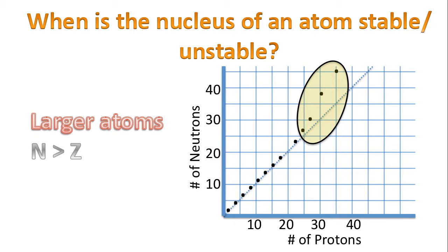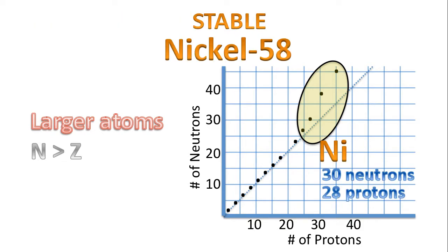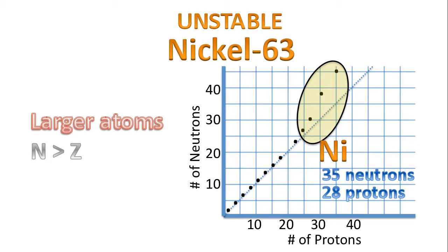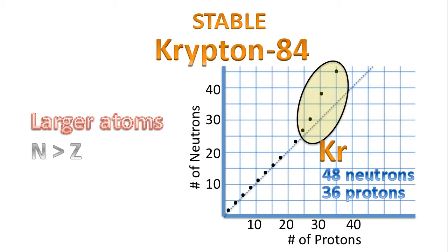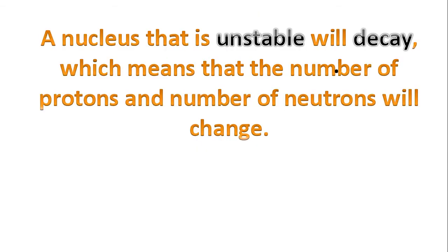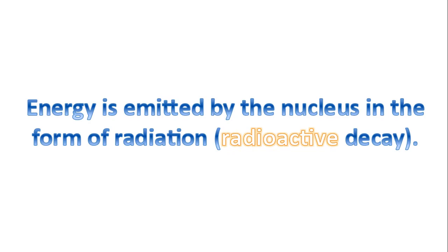Atoms that are larger are stable when the number of neutrons is greater than the number of protons. Nickel-58 has 30 neutrons compared to 28 protons, and that's considered to be stable. But nickel-63 is considered to be unstable — there are just too many neutrons. Krypton-84, with 48 neutrons compared to 36 protons, is considered to be stable. But krypton-85, with an extra neutron, is considered to be unstable. A nucleus that is unstable will decay, meaning that the number of protons and neutrons will change. When this decay takes place, energy is emitted by the nucleus in the form of radiation — hence, the decay is often referred to as radioactive decay.